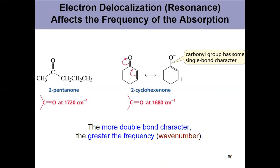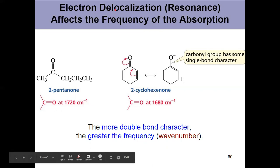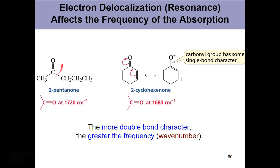Previously, we established that carbonyl absorption bands appear around 1700 wave numbers. But the exact position can be shifted by factors like electron delocalization. Look at these two comparisons: 2-pentanone, where the carbonyl is purely localized, versus 2-cyclohexanone, where the carbonyl pi bond character is delocalized by resonance. We have a minor resonance contributor which gives the carbonyl some single bond character. So the more double bond character, the stronger the bond, appearing at greater frequency and higher wave number, further to the left.